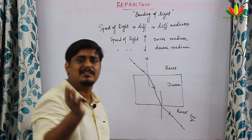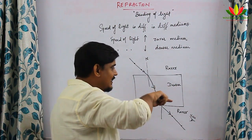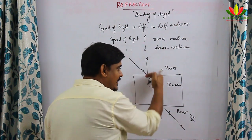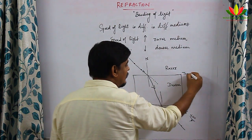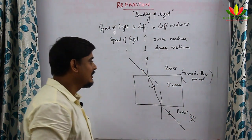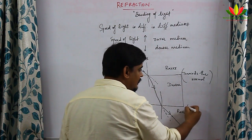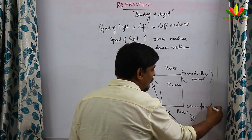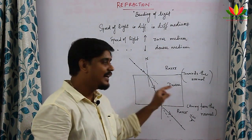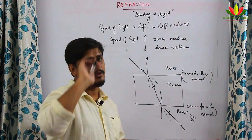When the light reached the other side, the medium changed from denser to rarer, so the speed changed again and it bent away from the normal. We learned that whenever a light ray enters from a rarer to a denser medium it bends towards the normal, and from a denser to a rarer medium it bends away from the normal.